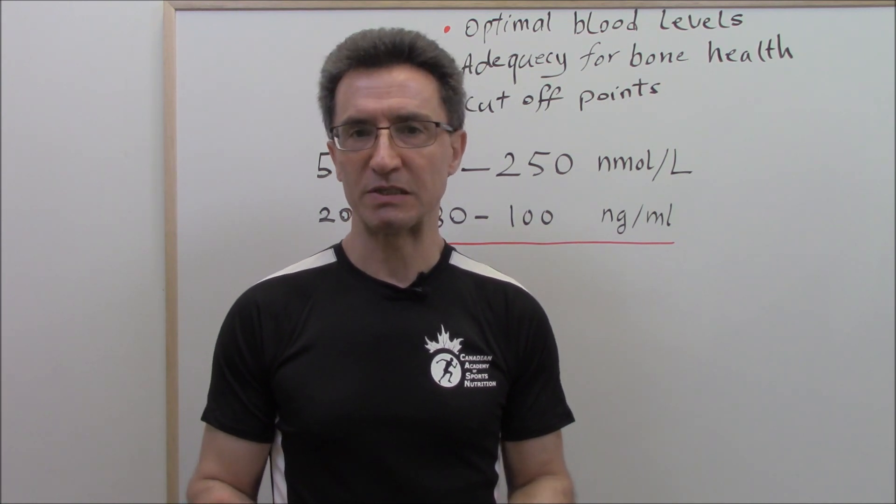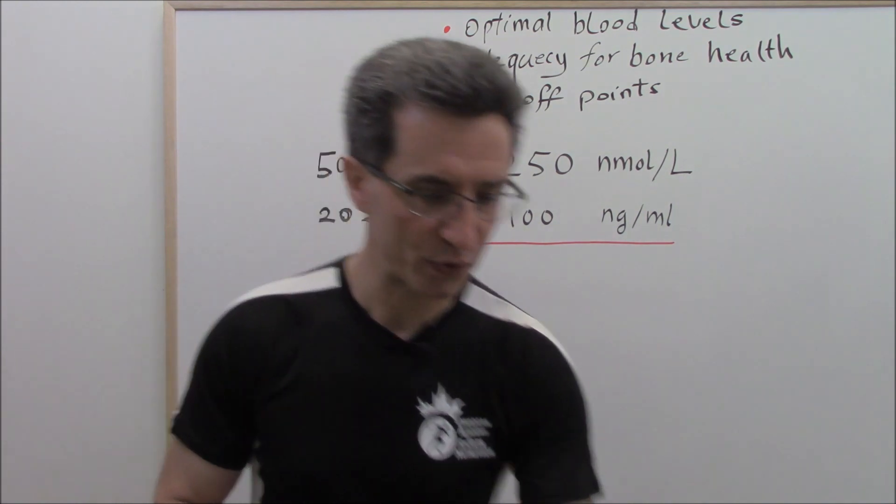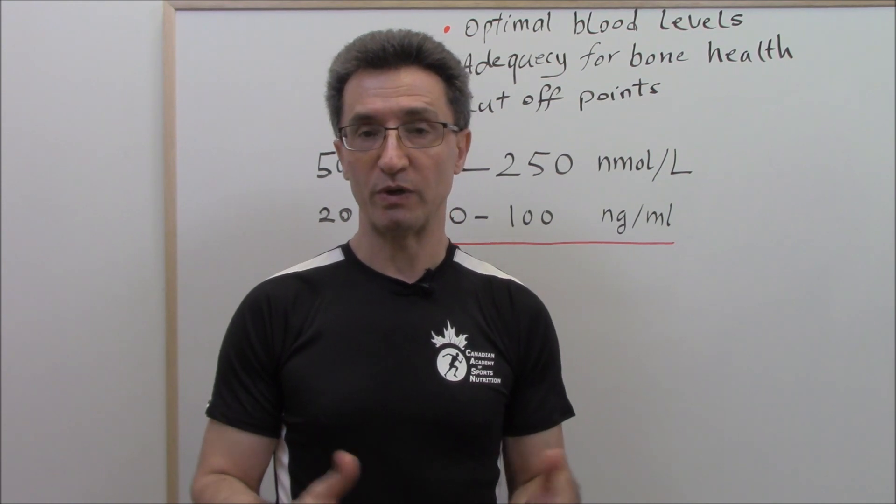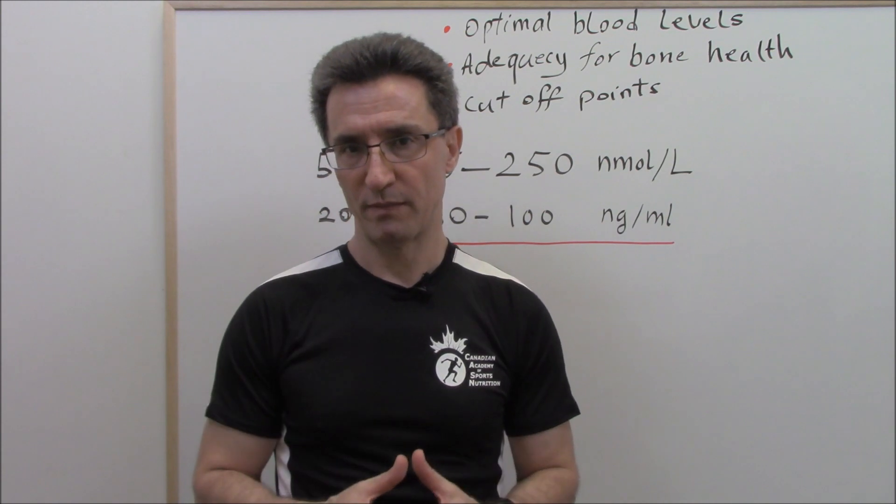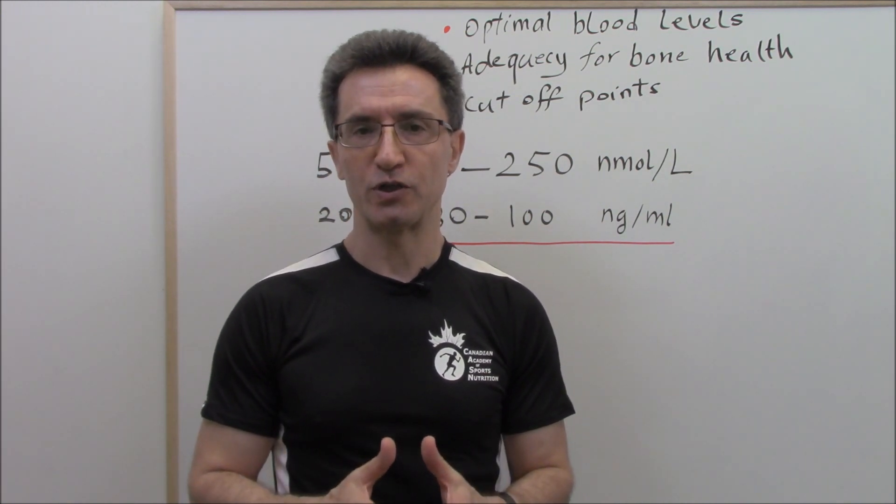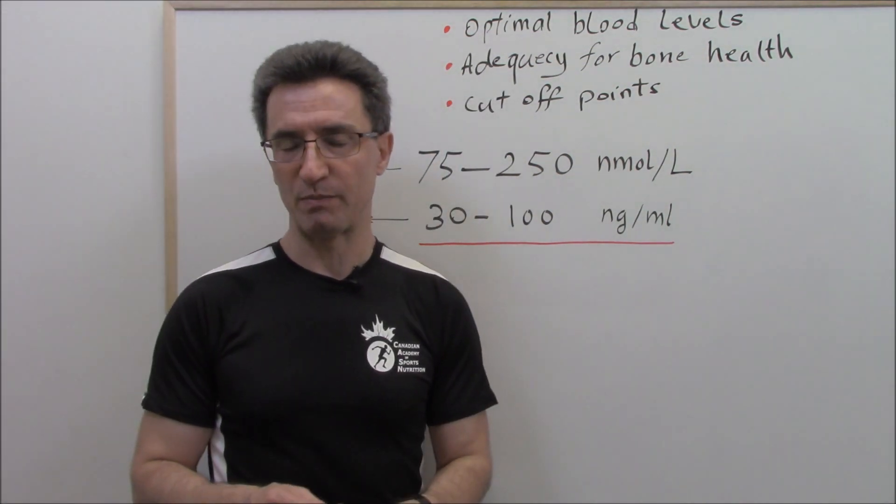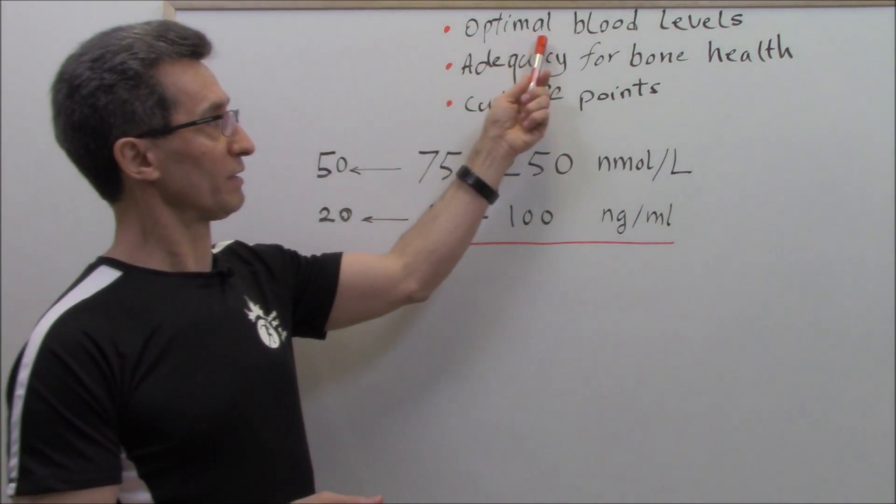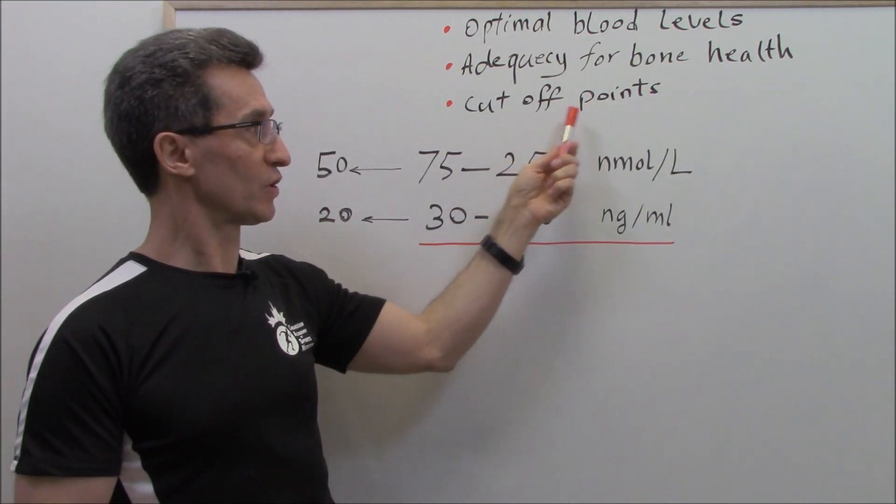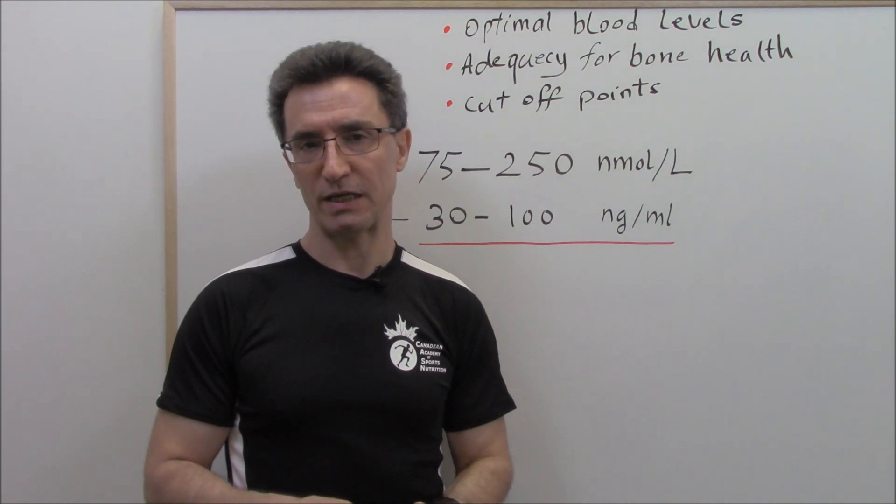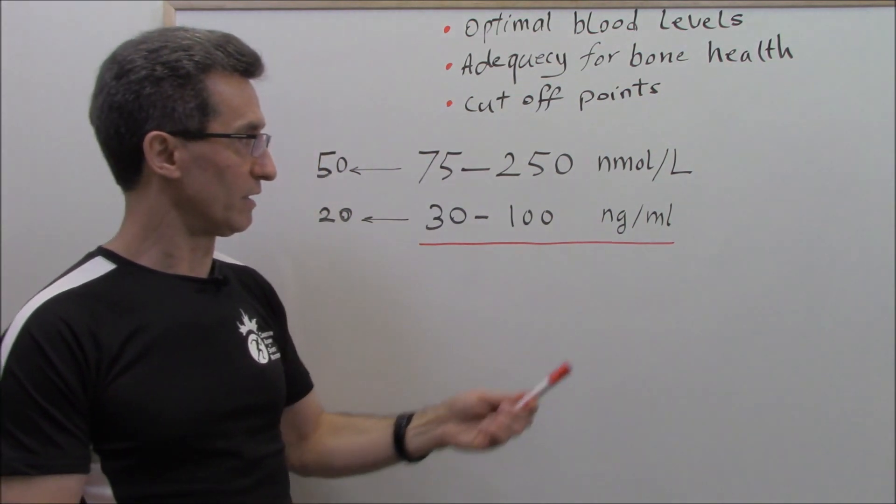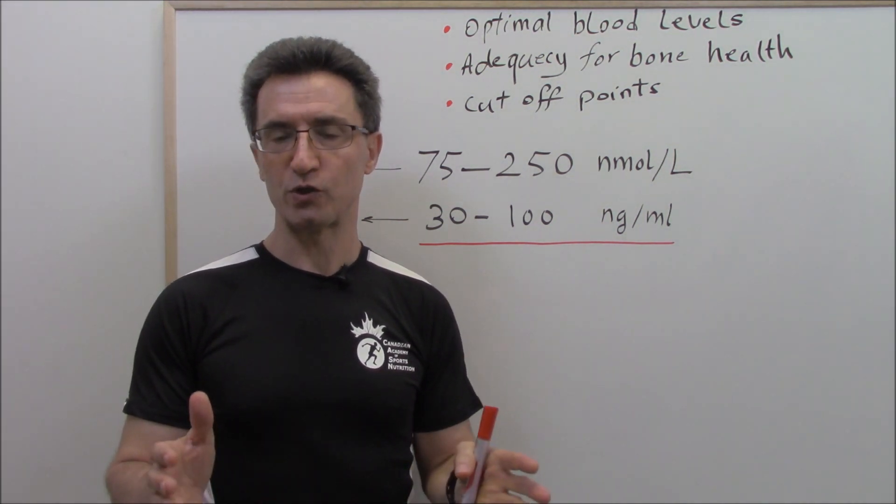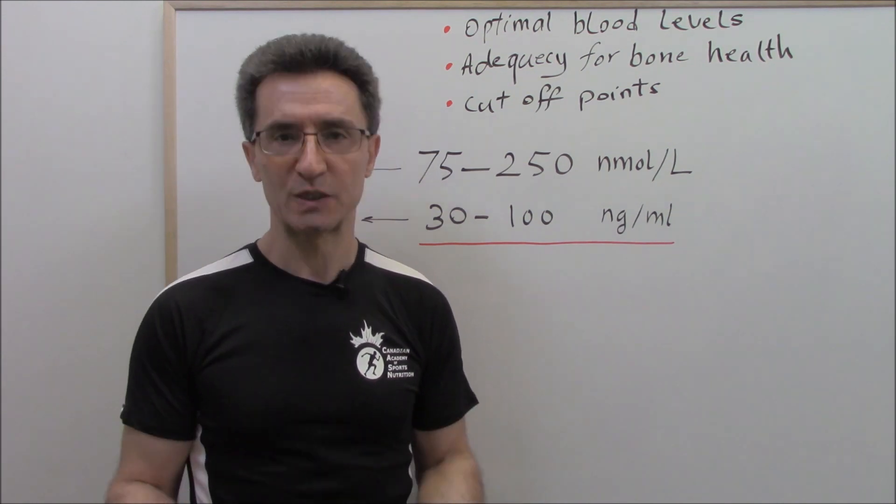The most famous and valid textbook in medicine is called Harrison's Principles of Internal Medicine. This is the book, edition 20, 2018. Usually every three to four years a new edition will come out. According to the book that I showed you and also according to NIH, National Institutes of Health, there is no consensus about optimal blood levels of vitamin D, adequacy for bone health and cutoff points. When checking your vitamin D level, they're going to check it either in nanomoles per liter or nanograms per milliliter, and you can convert them easily from one to another.